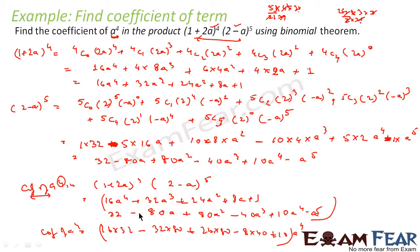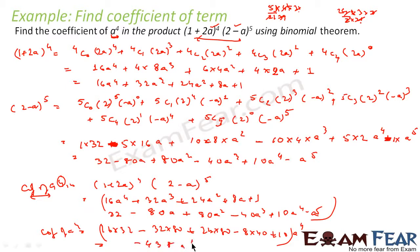For example, multiplying 1 × 32, or 1 × 80a, or 1 × a² will not give a⁴ — only 1 × 10a⁴ gives a⁴. Solving all five products and summing the coefficients gives −438a⁴.